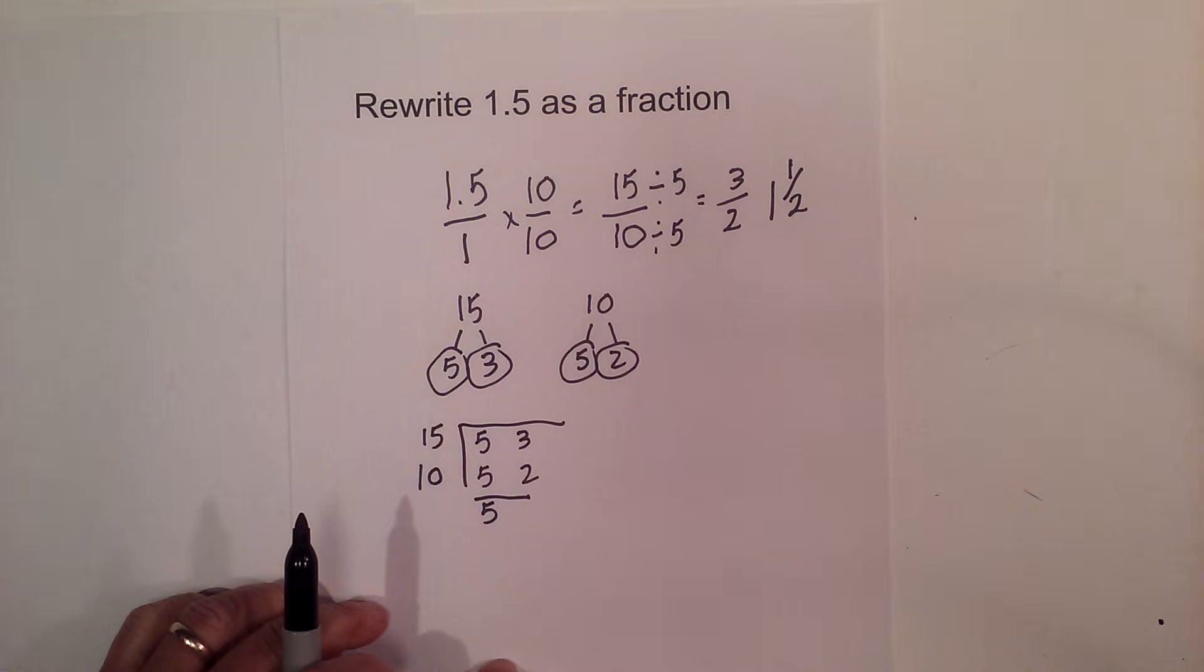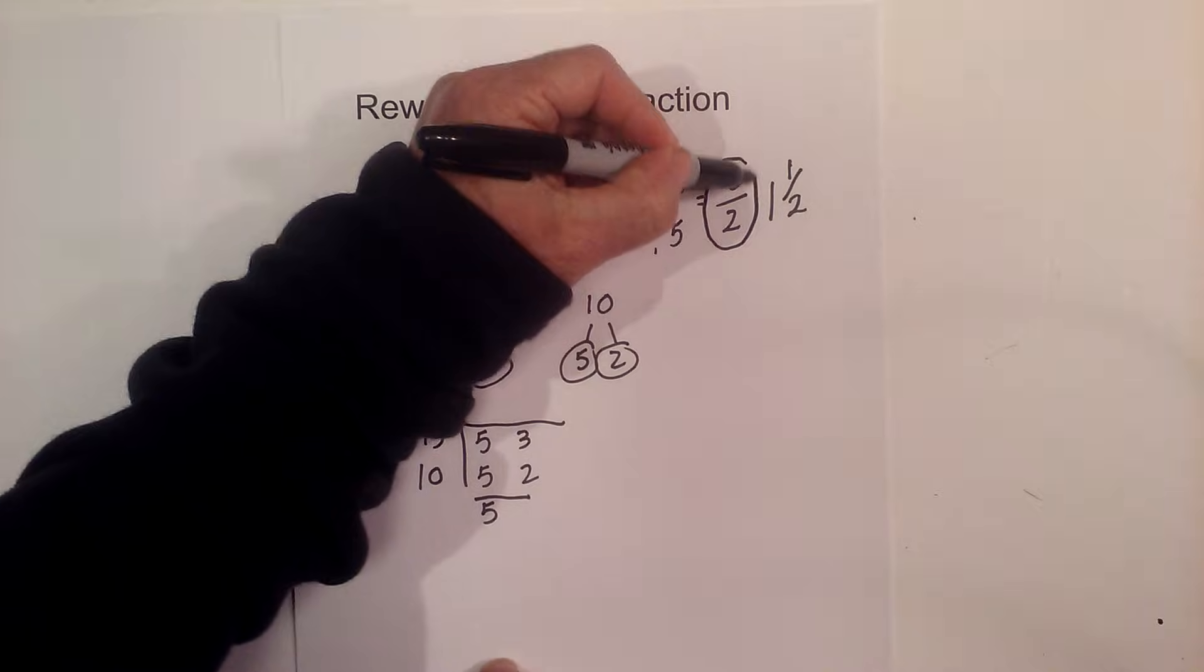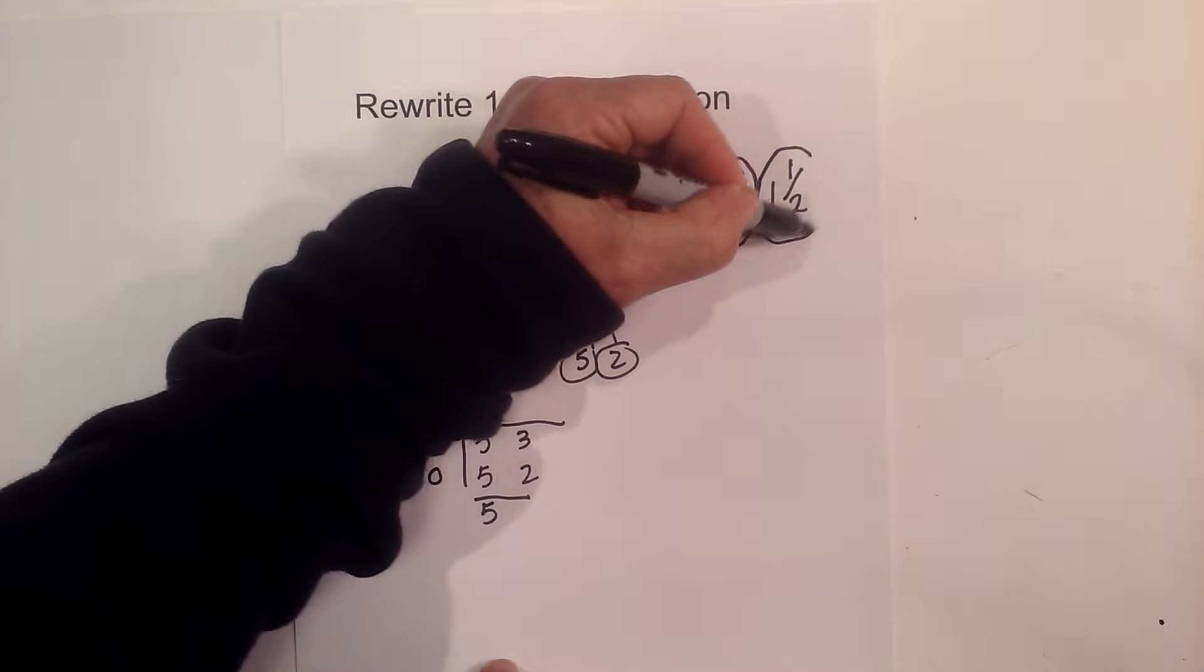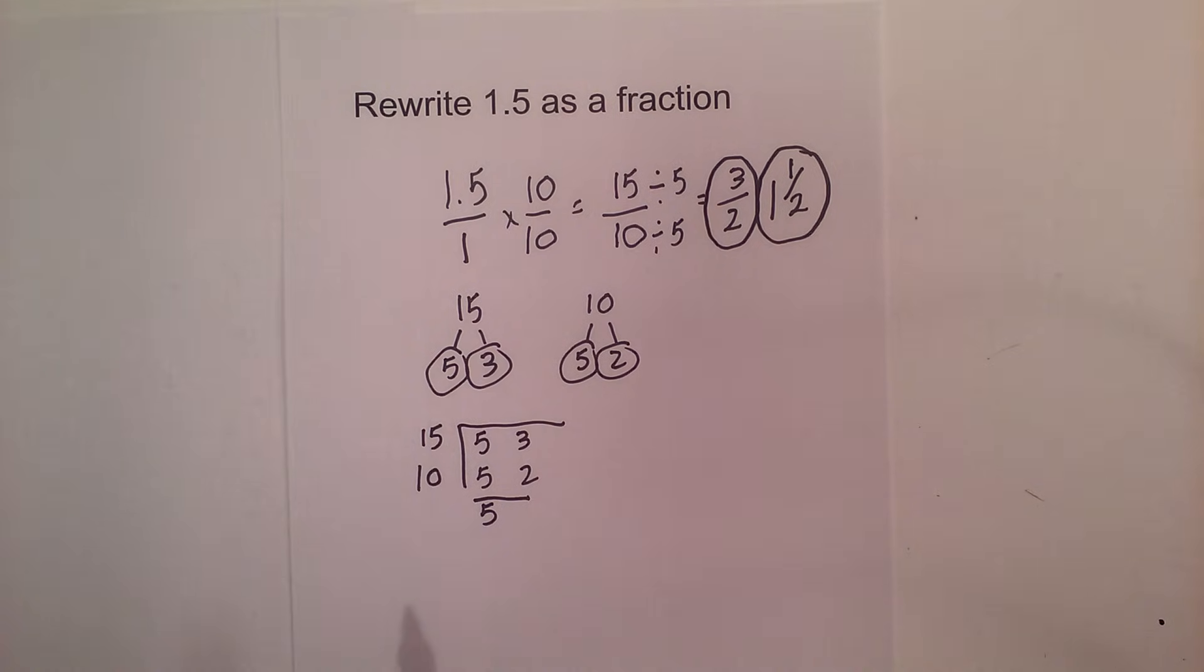So if you rewrite 1.5 as a fraction, you can write it as 3 over 2 or 1 and a half. I hope that helps. Thanks for watching and Moo Moo Math uploads a new math and science video every day. Please subscribe and share.